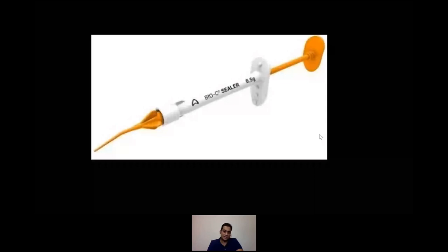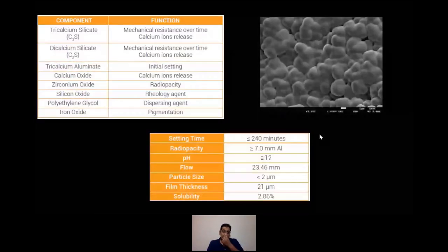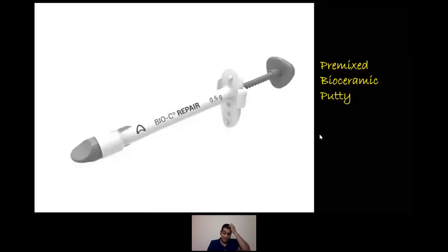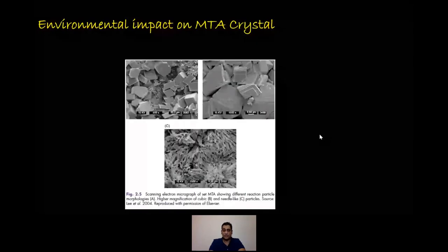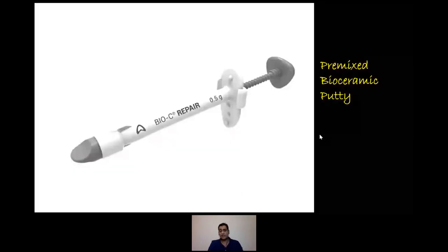The BiC sealer by Angelus was also introduced recently, with components including tri-calcium silicate, di-calcium silicate, zirconium oxide for radio-opacity, and rheology agents. The particle size is less than 2 microns, giving excellent flow. The BiC Repair is something to be excited about — not yet available but coming soon — and may replace using MTA in practice, as it's pre-mixed MTA in a putty form, making application quite simple.